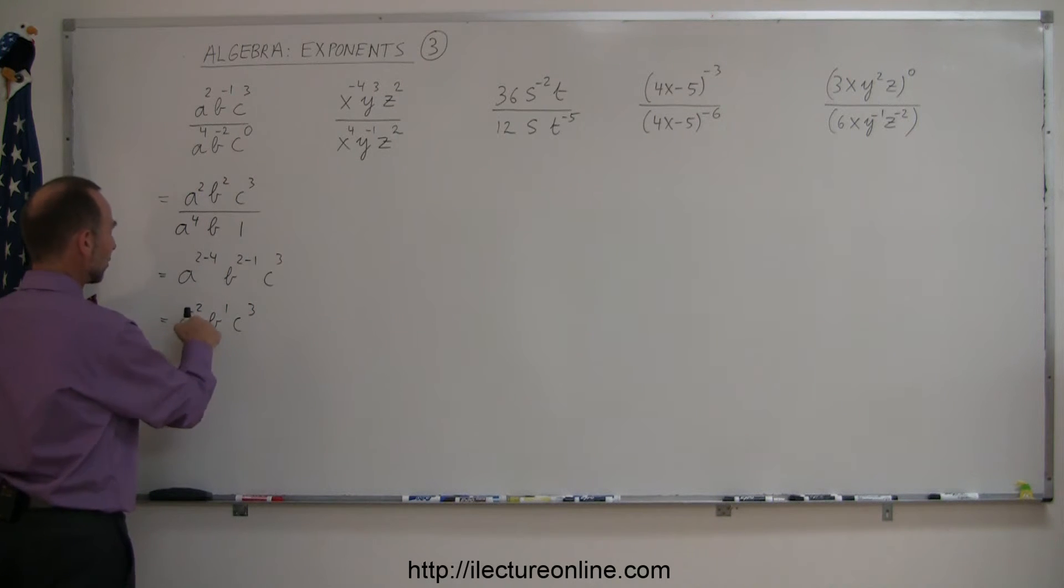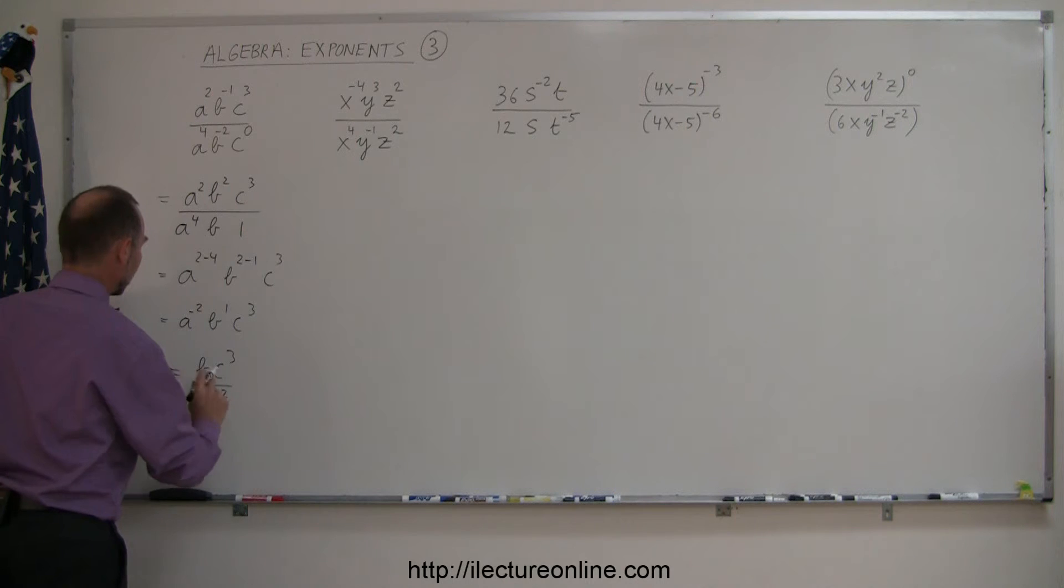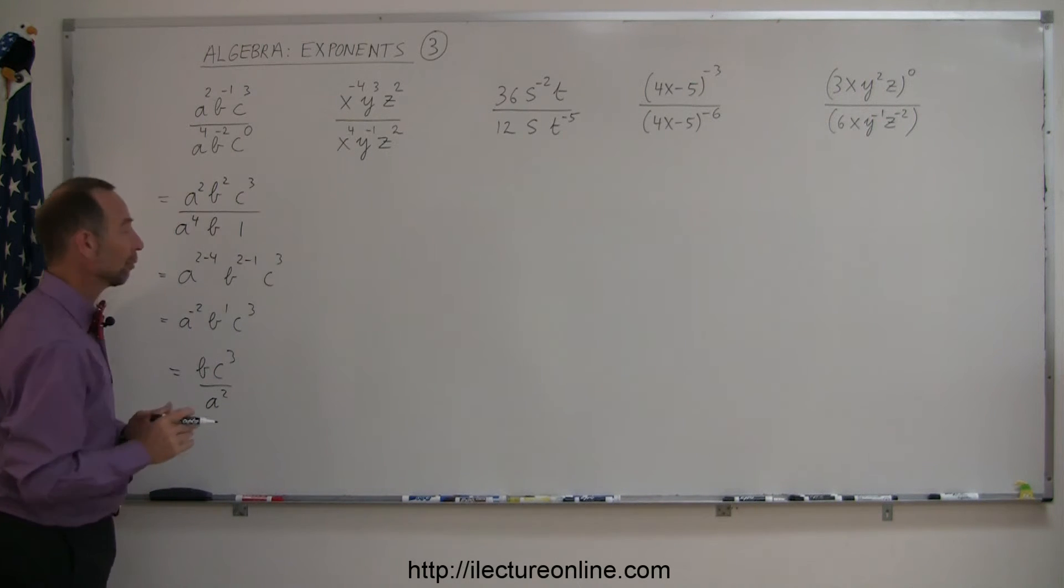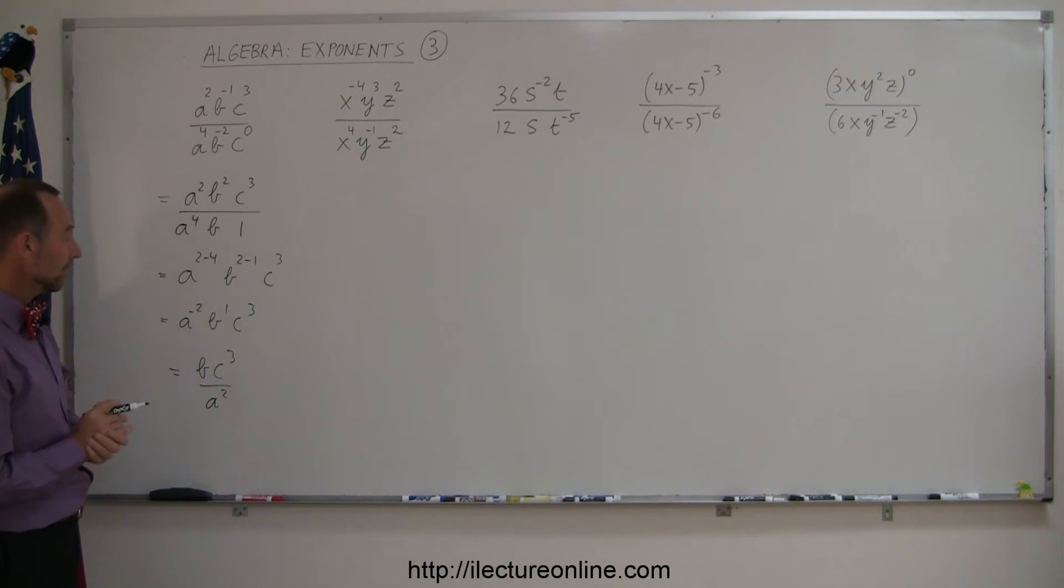And finally, a to the minus 2 power, since that's a negative exponent, I'm going to move that into the denominator. That's b c cubed over a squared. And that's a simplified form of what I started with. All right, so again, there's different ways of doing this. You don't have to follow that technique, but it just makes things a little bit simpler.